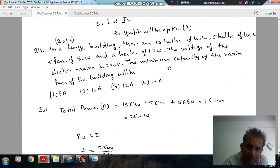In a large building there are 15 bulbs of 40 Watt, 5 bulbs of 100 Watt, 5 bulbs of 80 Watt, and a heater of 1 KW. The voltage of electric mains is 220 V. The minimum capacity of the main fuse of the building will be.